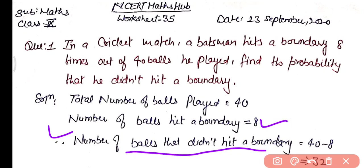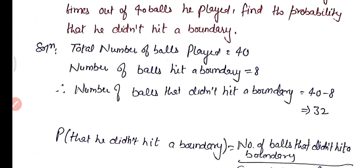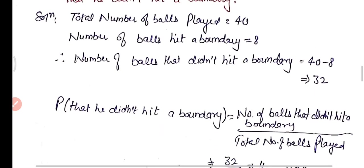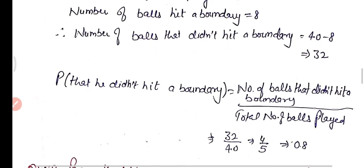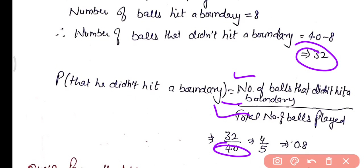Probability that he did not hit a boundary equals number of balls that did not hit the boundary upon total number of balls played. Balls that did not hit the boundary are 40 minus 8 equals 32. So the probability is 32 upon 40, which simplifies to 4 upon 5, that is 0.8.